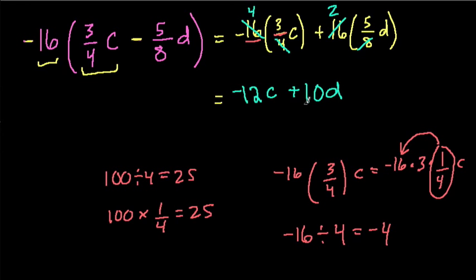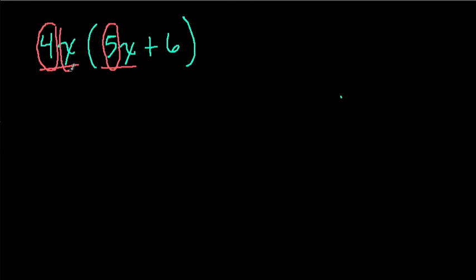A couple more to go. This next one is a little different just because we have to remember that you have to always simplify as far as you can. Now we're starting with a number and a variable as our first factor: 4x times (5x + 6). What do we do? 4x times 5x is first, and one easy way to think about this is to multiply the coefficients.